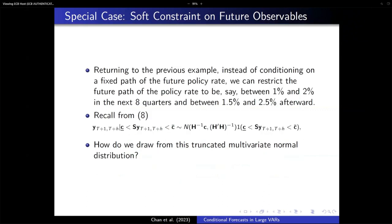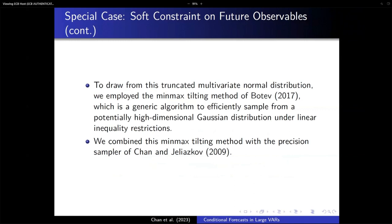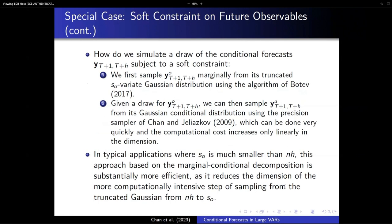For the soft constraint — for example, conditioning on GDP being between 2% and 3% — we need to draw from a truncated multivariate normal distribution. The intuition is that we combine the precision sampler with the Botev exponential min-max tilting method. We first draw the constraint variable marginally from the multivariate truncated normal using the Botev method, and then, given that draw, we generate the conditional forecast using the precision sampler. For full details on the soft constraint algorithm, you can read the paper or talk to me or Josh.